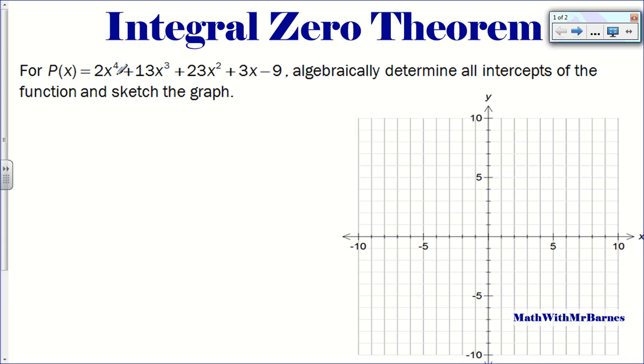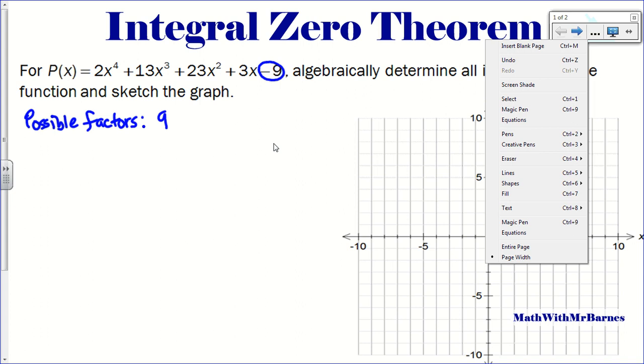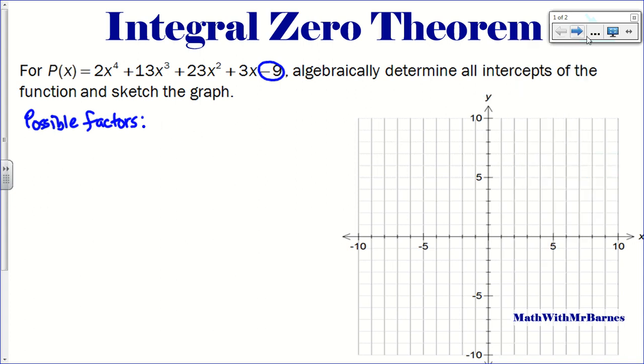So this is an example here. You can see that this is a quartic because it's to the power of 4. This doesn't factor by any simple means, so we want to use the integral zero theorem. We want to identify the possible factors. The possible factors are if we look at this last value, the constant of the polynomial. So the possible factors of 9 are plus or minus 1, plus or minus 3, and plus or minus 9.